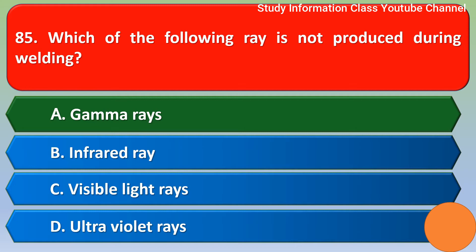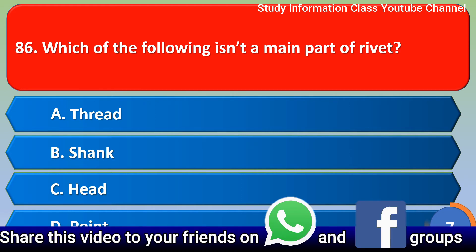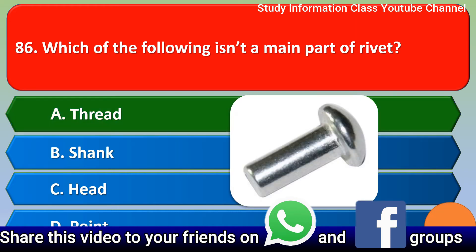Next question: Which of the following is not a main part of a rivet? Option A thread, option B shank, option C head, option D point. The correct answer is option A, thread — that is not a main part of a rivet.